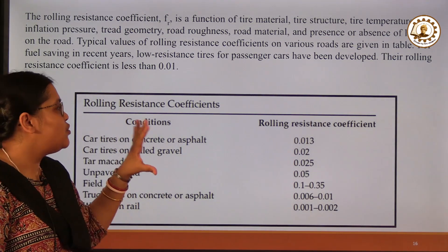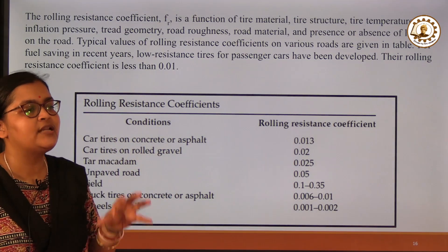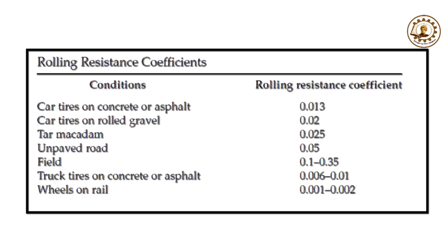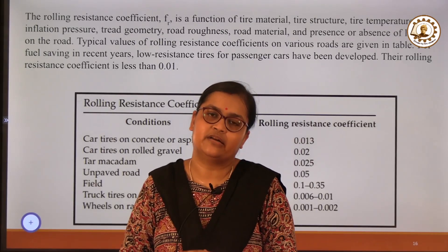By putting in the rolling resistance coefficient value and the angle α, we can easily calculate all the resistive components needed for analyzing the basics of vehicle performance. With all components put together and the data available, we can solve problems and understand the physics and mathematical analysis behind vehicle performance — which is the stepping stone for learning about electric vehicles and hybrid electric vehicles.